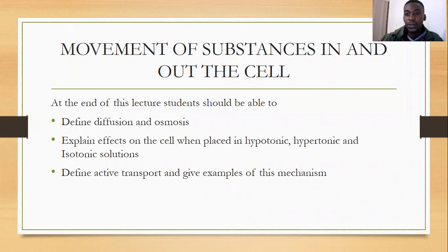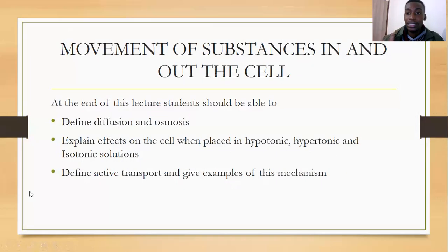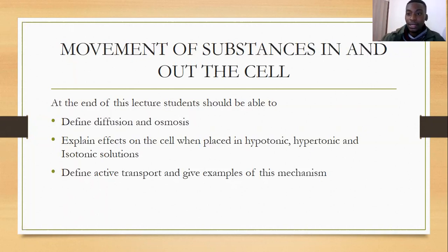Today we're going to talk about movement of substances in and out of the cell. Our objectives are to define diffusion and osmosis, explain the effects on cells placed in three types of solutions — a hypotonic solution, a hypertonic solution, and an isotonic solution — and understand the process of active transport, its mechanisms, and examples in both plant cells and animal cells.